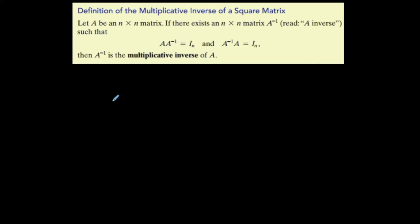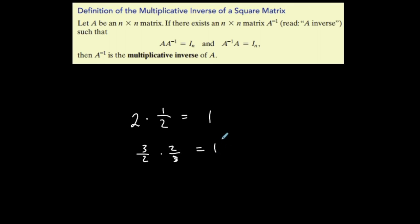If you recall from back in the day, multiplicative inverses — like if I take two and multiply it by one-half, anything times its reciprocal is one. Three-halves and two-thirds are multiplicative inverses because their product is one. The same thing applies to matrices: when I multiply a matrix by its multiplicative inverse, I should get the identity matrix, which has ones down the diagonal and zeros everywhere else.